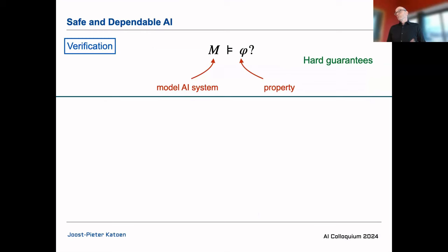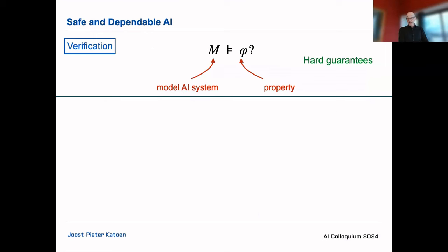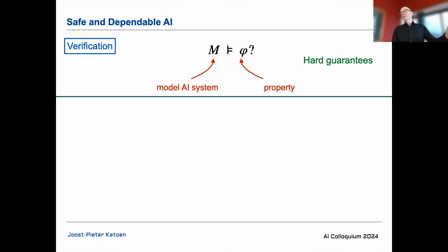I'll cover two views. The first is the verification view: you have a model, a concrete property, and you want to check whether the model satisfies that property — giving hard guarantees. It's not the case that we run a program a million times and hope the million-and-first run is also safe. We want hard guarantees that the system model satisfies the property.